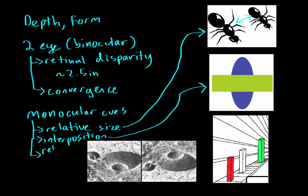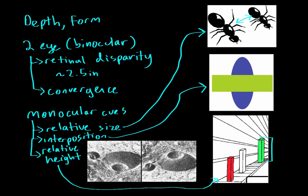Another monocular cue is relative height. Relative height means that objects perceived to be higher up in the visual field are perceived to be further away than those that are lower. For example, one rectangle placed higher than a red rectangle is perceived as further away, even though they are actually the same exact shape and size. It's just placed physically higher, so we perceive it to be further away. That's relative height, and it's a monocular cue.